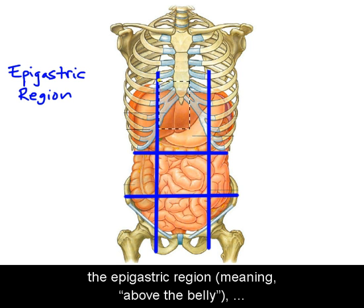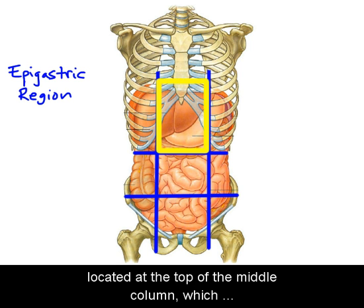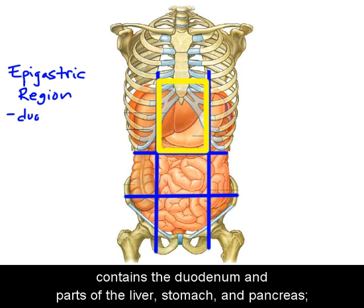The epigastric region, meaning above the belly, is located at the top of the middle column and contains the duodenum and parts of the liver, stomach, and pancreas.